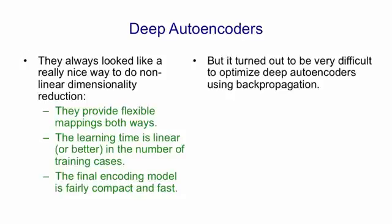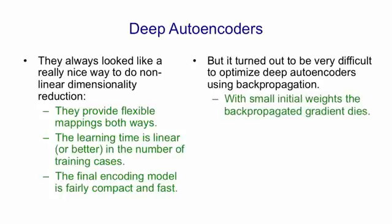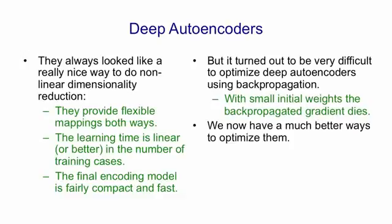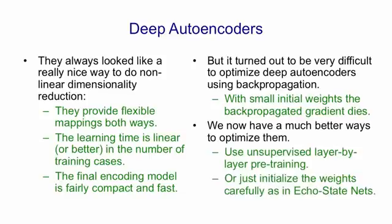Unfortunately, it was very difficult to optimize deep autoencoders using backpropagation. Typically people tried small initial weights, and then the backpropagated gradient died. So for deep networks, they never got off the ground. But now we have much better ways to optimize them. We can use unsupervised layer-by-layer pre-training, or we can simply initialize the weights sensibly, as in echo state networks.